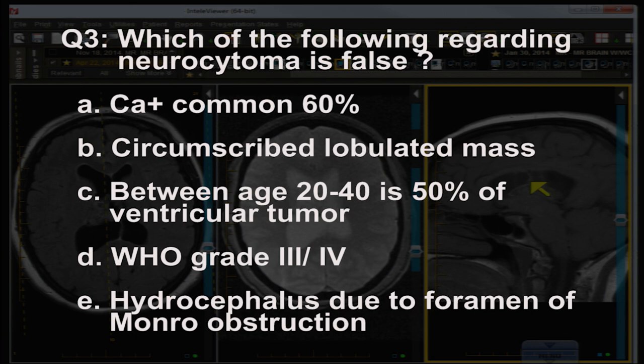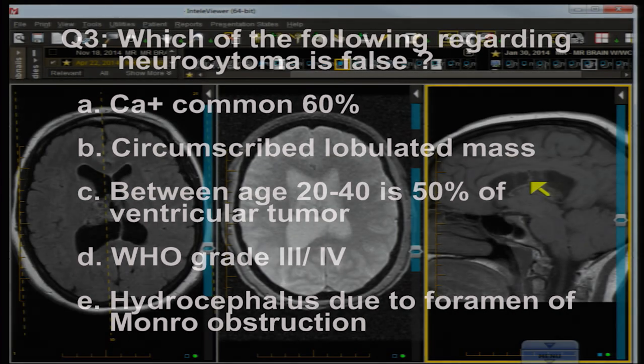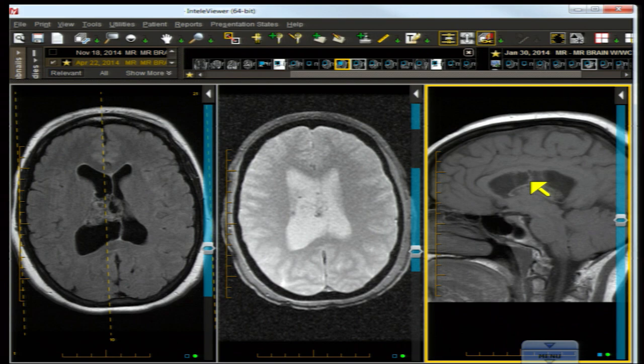Calcification is common; the lesion is a circumscribed lobulated mass; the age range is 20 to 40. Even though it is a very uncommon to rare intraventricular tumor, between ages 20 and 40 it accounts for 50% of intraventricular tumors — not masses, tumors. Hydrocephalus due to foramen of Monroe obstruction is a common feature. The foramen of Monroe seems to be a magnet, drawing unique lesions that help narrow the differential diagnosis. Answers: 1B, 2A, 3D.